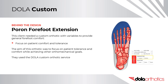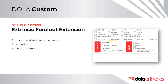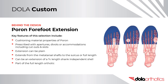Behind the Design – Pour-on Forefoot Extension. This client needed a custom orthotic with variables selected to provide general forefoot comfort. The aim was to focus on patient tolerance and comfort while achieving other orthomechanical goals. They used the Dollar Custom Orthotic Service and selected the pour-on thickness from the extension section of the finishing section of the Dollar detailed prescription form. A pour-on forefoot extension provides the cushioning properties of pour-on. It can be prescribed with apertures, divots, or other accommodations including cut-outs and slots, or left plain. It extends from the metatarsal shafts to the sulcus or full length.